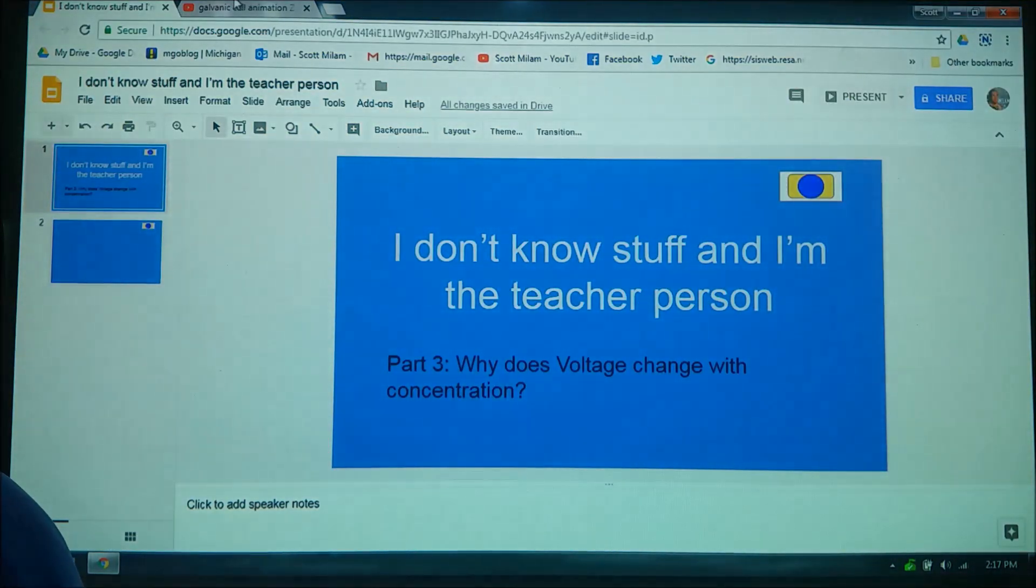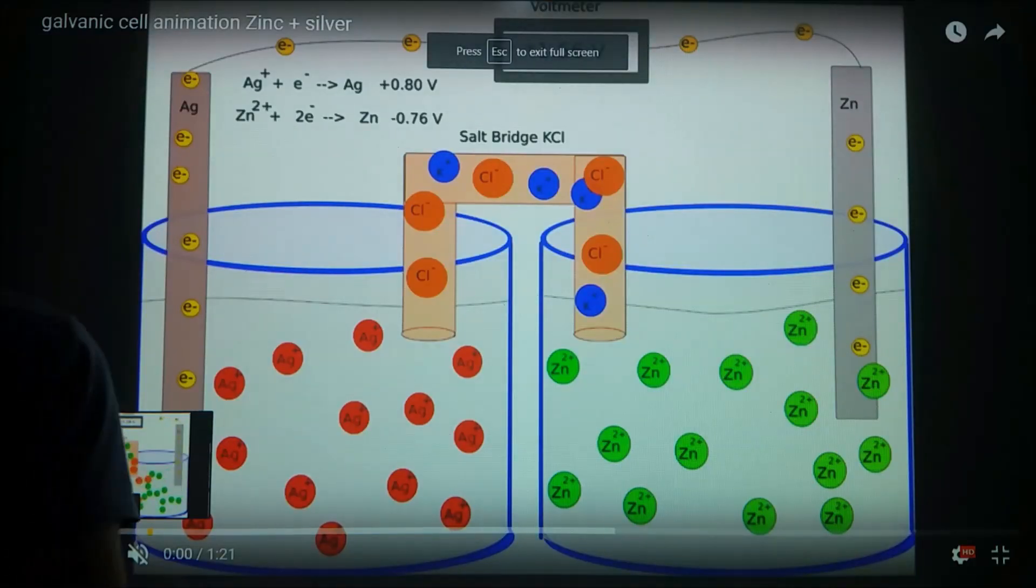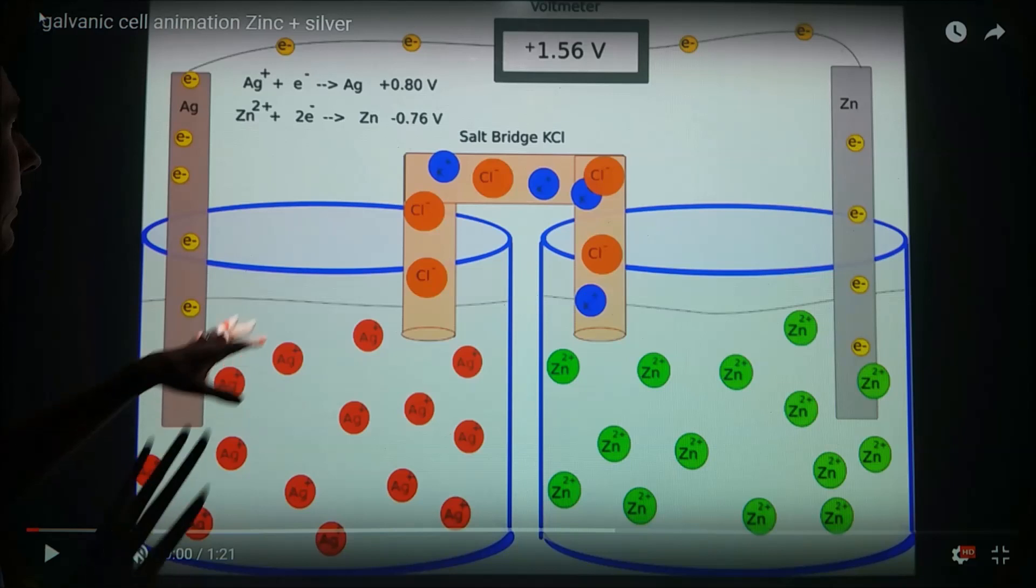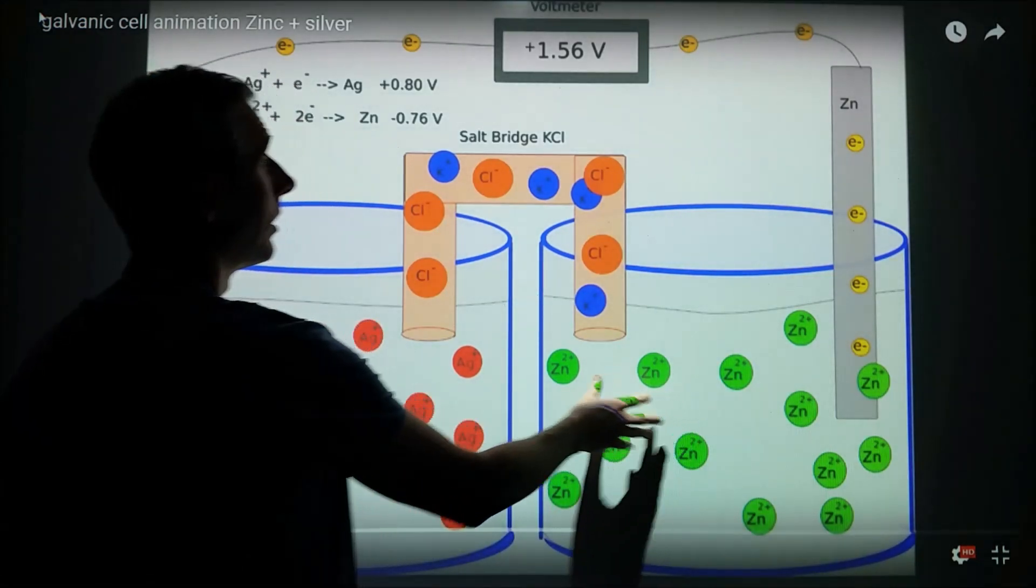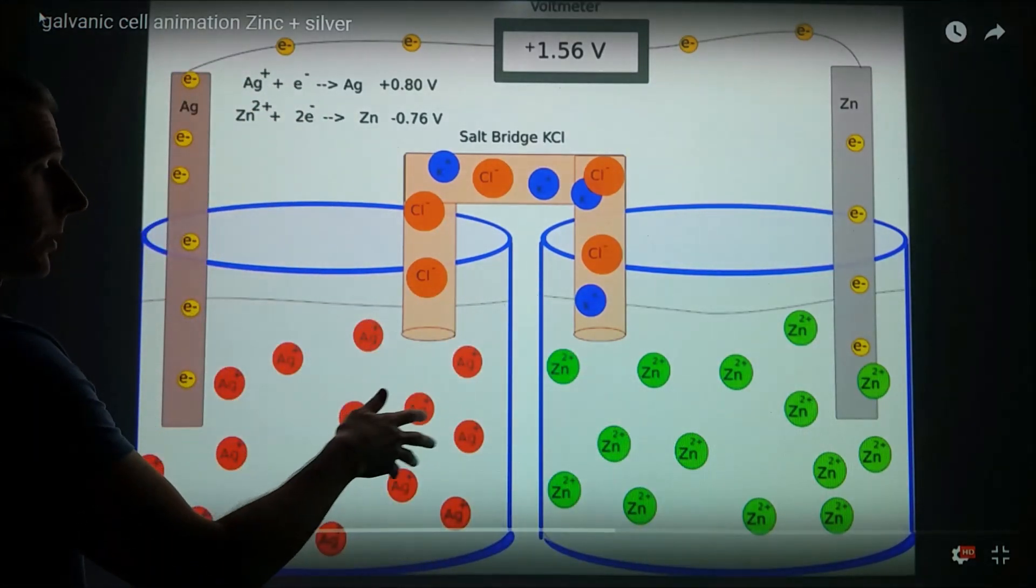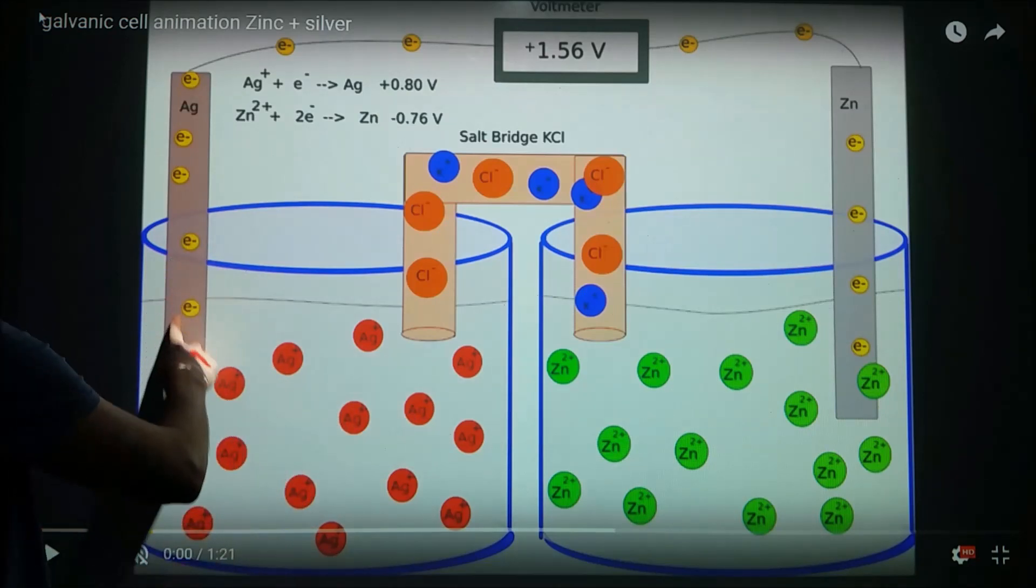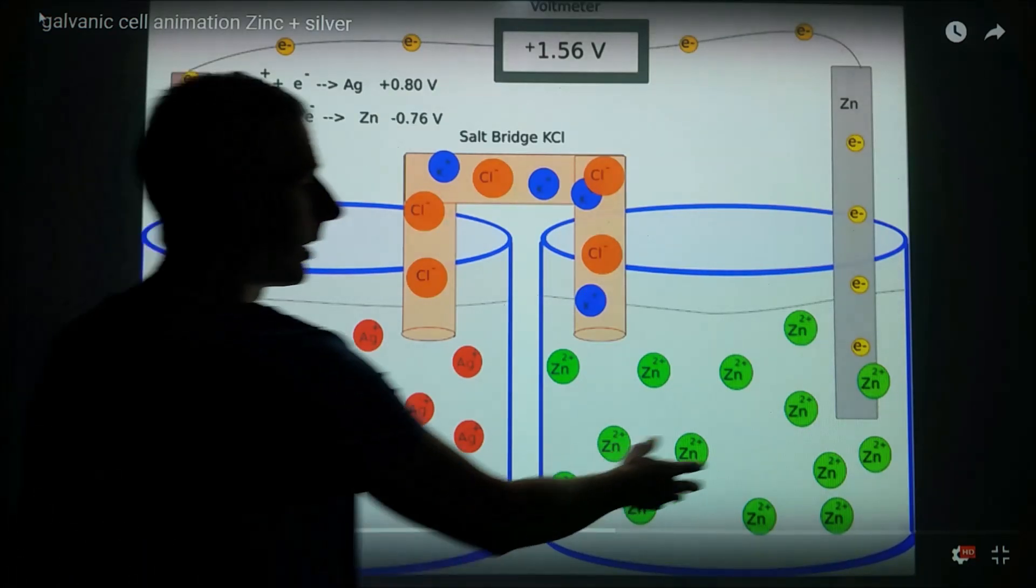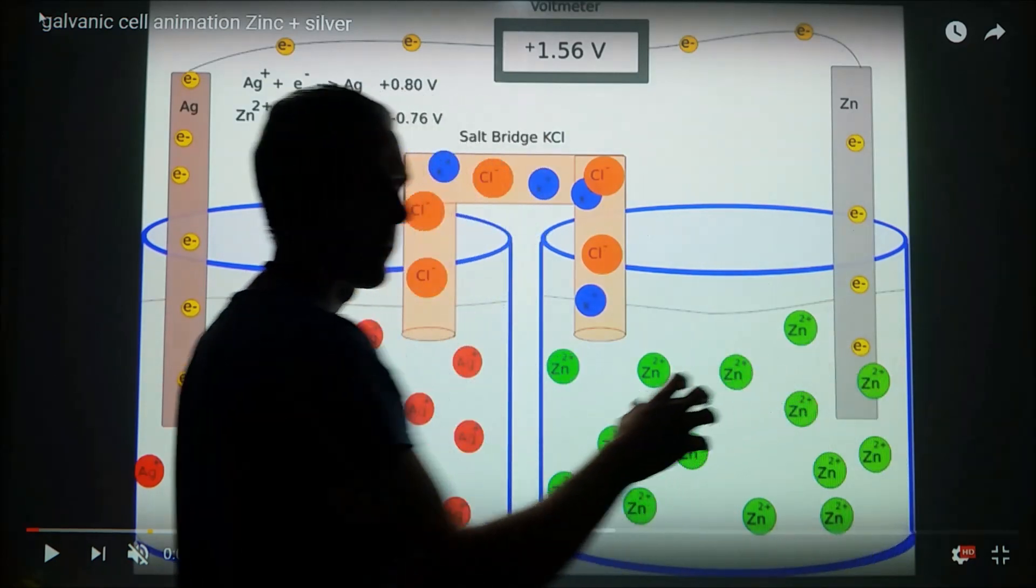Here's an animation. In the animation, we have a silver half cell and a zinc half cell. When we hit play, the electrons are going to be drawn towards the silver cations and away from the zinc cations that are in this metal.